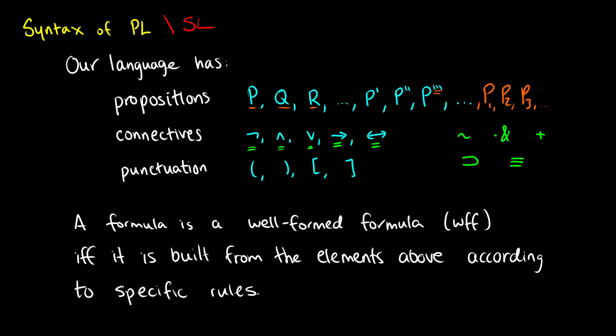Finally, we have punctuation. We're allowed to have a left parentheses, a right parentheses, and then square brackets. We say that a formula is well-formed — it's a well-formed formula, abbreviated as WFF.